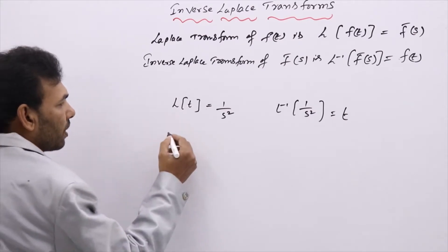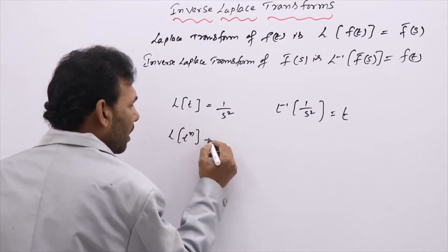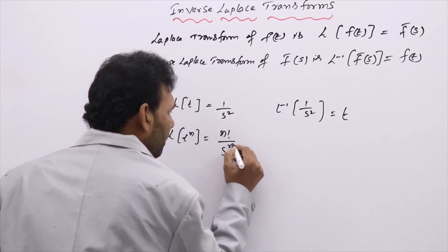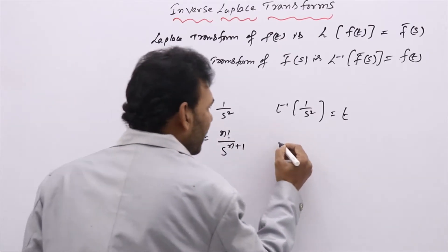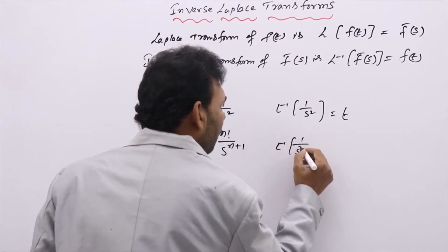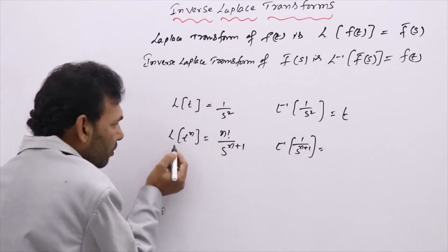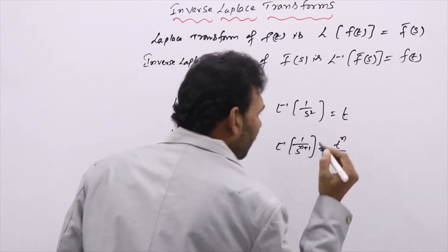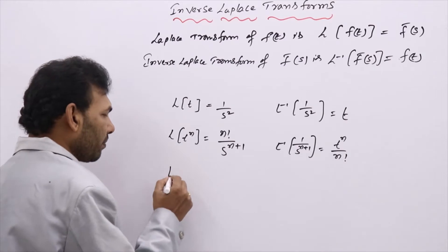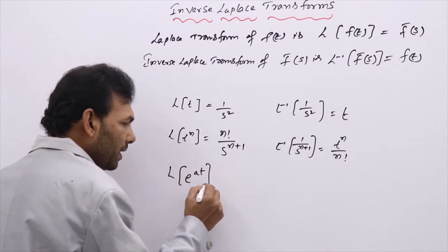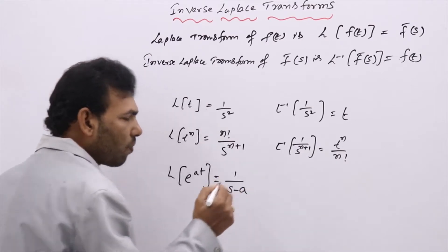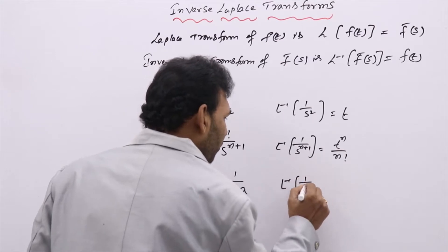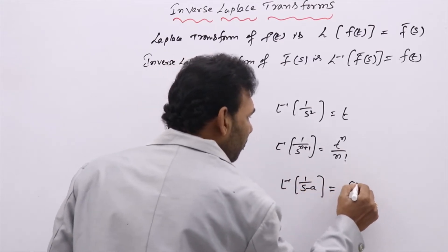Quite opposite. L of t power n is n factorial by s power n plus 1. Coming to inverse: L inverse of 1 by s power n plus 1 — by the constant rule — is t power n by n factorial. Similarly, L of e power at is 1 by s minus a, so L inverse of 1 by s minus a is e power at.